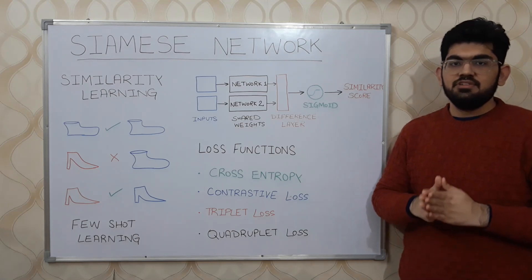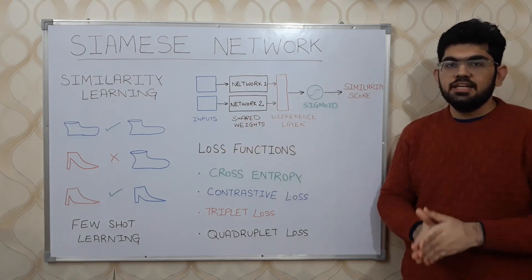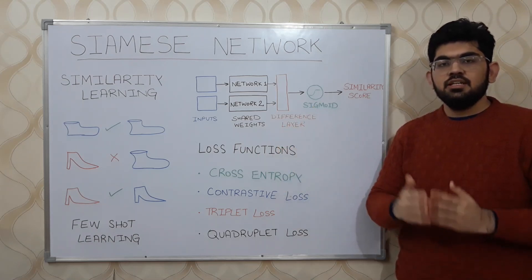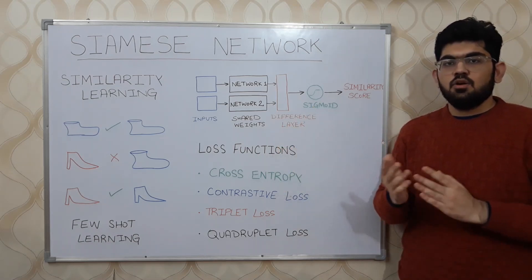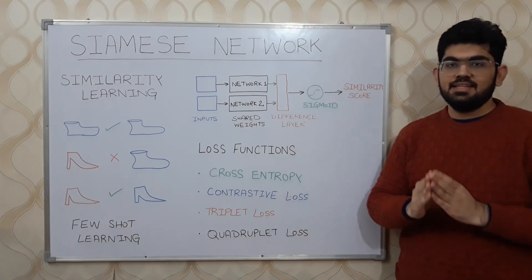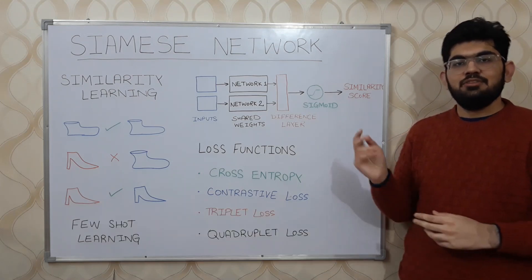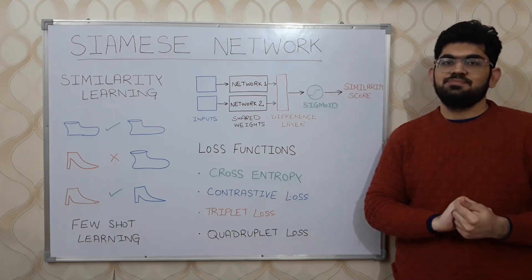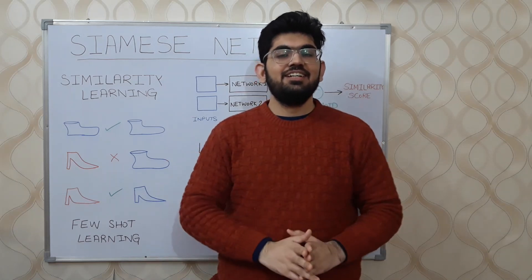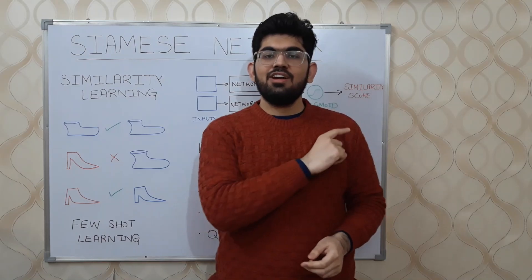Once the Siamese network has been trained using this complete architecture, we may isolate this network and use it to generate embeddings of the different given input images. These embeddings can then be used for data visualization or the comparison task that we have been doing all along. Now let us have a brief look at the code.